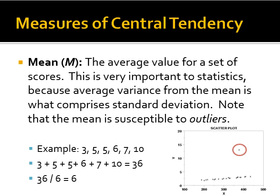Let's say we have scores of 3, 5, 5, 6, 7, and 10. To compute the mean, you add all of those together and divide by the number of scores. So 3 plus 5 is 8, plus 5 is 13, plus 6 is 19, plus 7 is 26, and plus 10 is 36. We then divide by the number of values — we have 6 total — so 36 divided by 6 equals 6. So 6 is our mean.